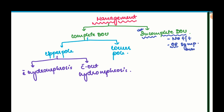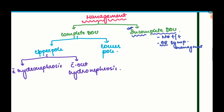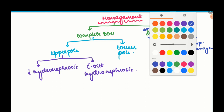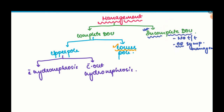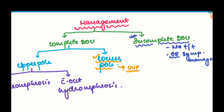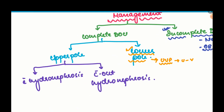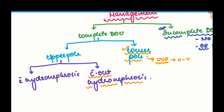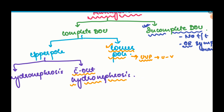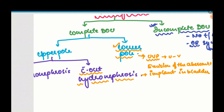For complete DOU, the lower pole ureterocele presents with VUR — treatment is UVP, ureterovesicoplasty, to fix the ureterovesical junction to prevent VUR. For the upper pole ureterocele without hydronephrosis, excise the ectopic insertion of the ureter and implant it normally in the bladder.